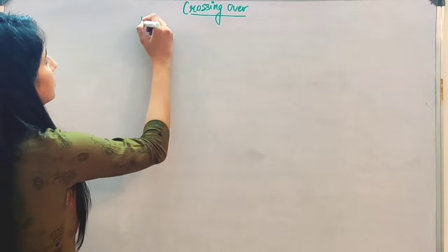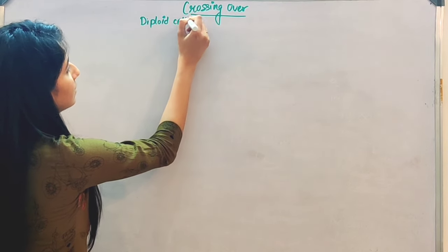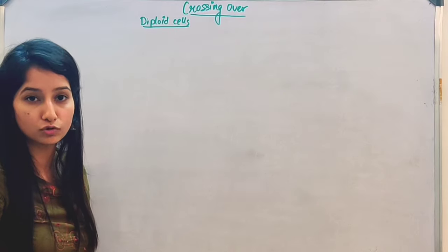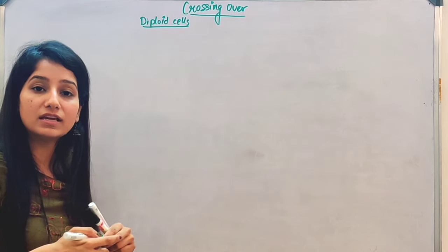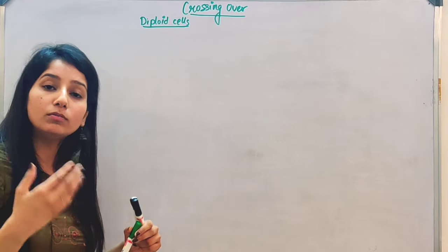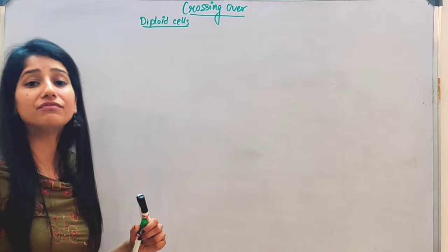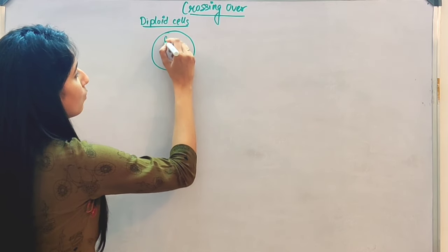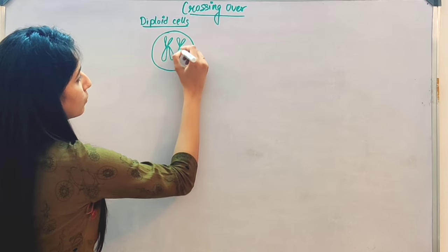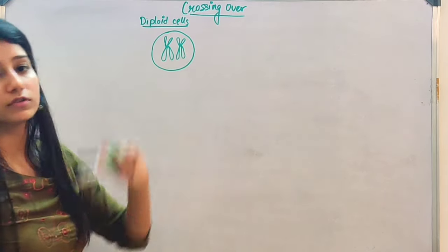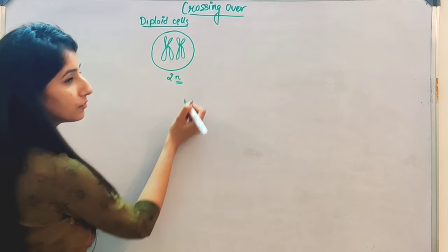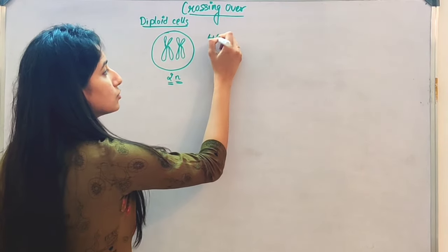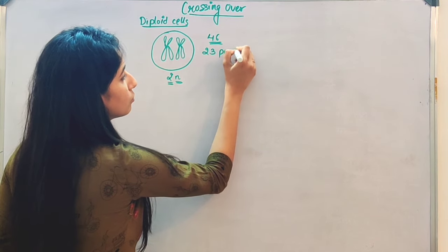If we see a diploid cell — diploid meaning the cell having two copies of chromosomes — like we human beings have 23 pairs of chromosomes. What do you mean by 23 pairs? That there are two copies of every chromosome. The diploid cell will have one chromosome and there will be a copy of this chromosome. This is known as 2N, where N is the number of chromosomes and 2 is its copies. So in humans, 46 chromosomes are present, or we can say 23 pairs of chromosomes are present.